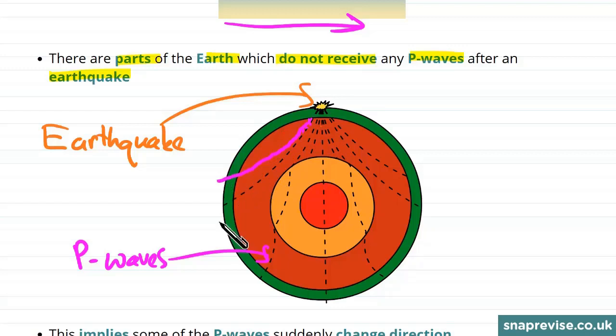What we do see however is that there is a part of the Earth that doesn't receive any P-waves. So these parts of the Earth here don't receive P-waves.